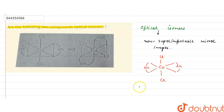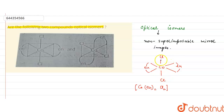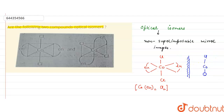For this compound, that is [Co(en)₂Cl₂], its optical isomer would not be present, because its mirror image — if we place a mirror here, its mirror image will be the same compound.